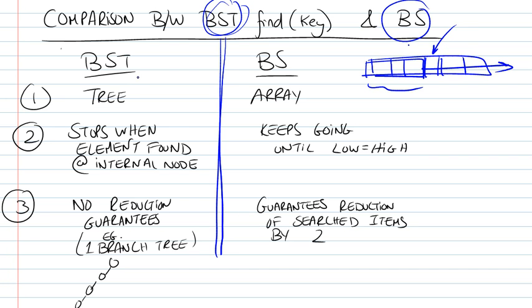So let's look at the differences and similarities. BST uses a tree. Binary search uses an array. The BST, what is good about it is that once you find an element, it will stop at that element. It will not carry on.